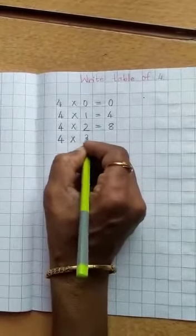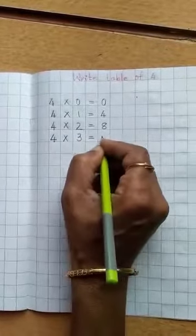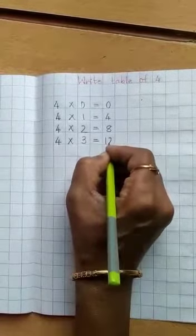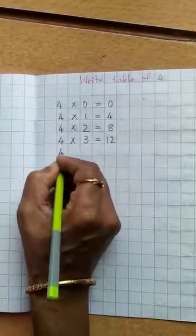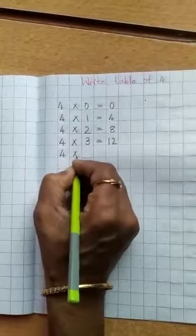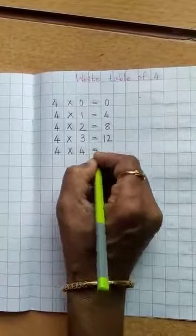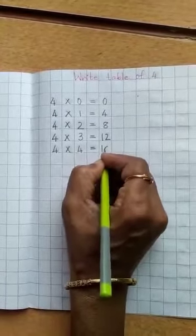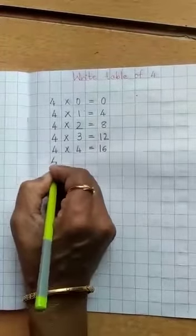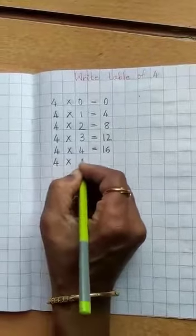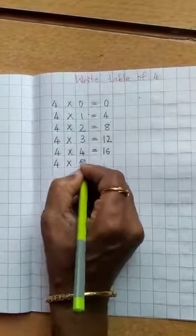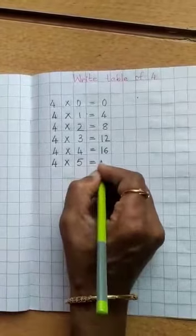4 3's are 12. 4 4's are 16. 4 5's are 20.